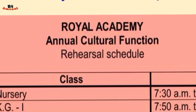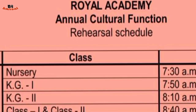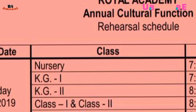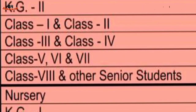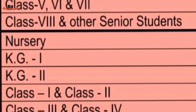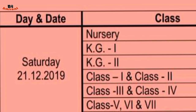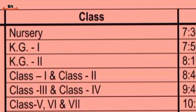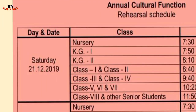The timetable is for the Royal Academy annual cultural function rehearsals schedule. The classes shown are: Nursery, KG1, KG2, Classes 1 & 2, Classes 3 & 4, Classes 5, 6 & 7, and Classes 8 and other senior students. The data shows the year 21-22 with kiss-kiss time and getting ready classes for rehearsal.